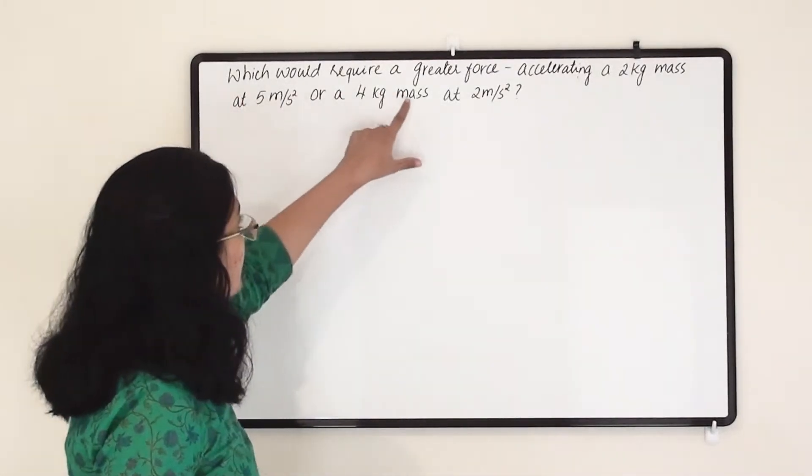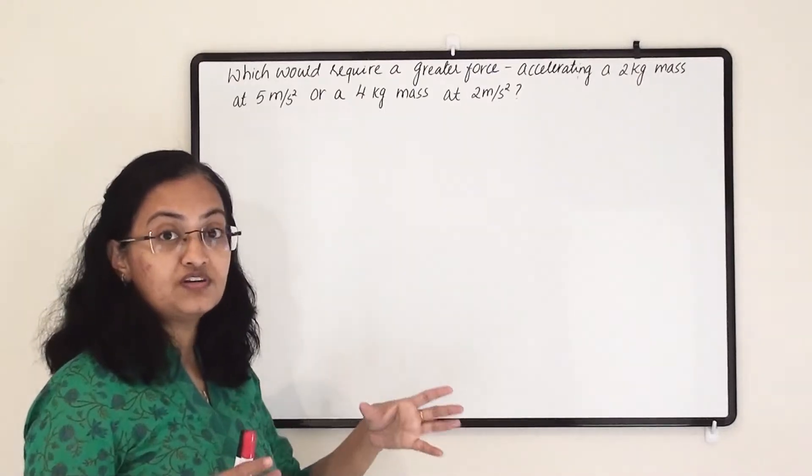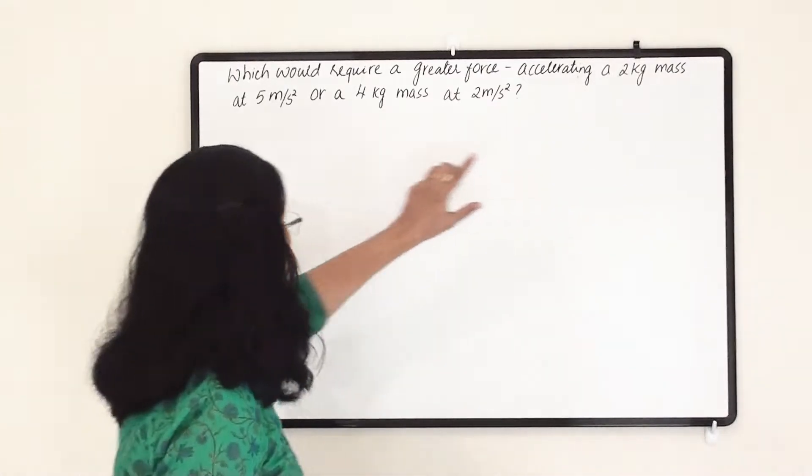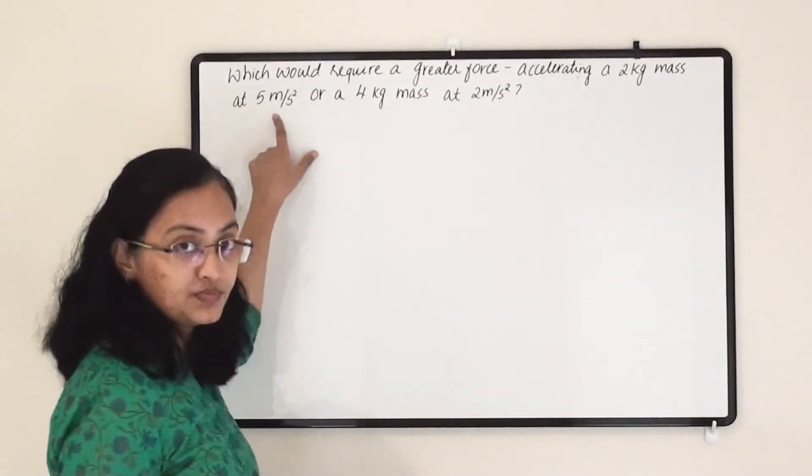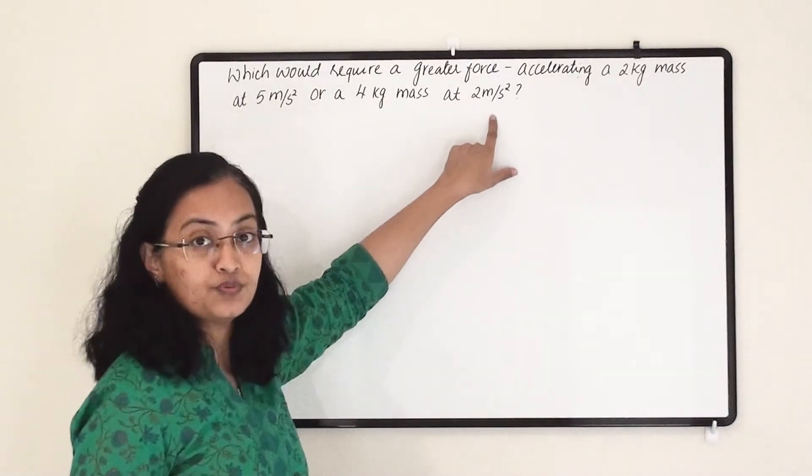Which would require a greater force? So from these two objects, which object will require greater force? For which situation? Accelerating a 2 kg mass at 5 meter per second square or a 4 kg mass at 2 meter per second square.